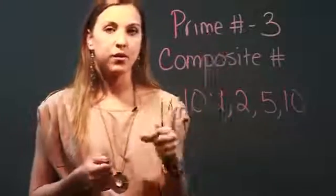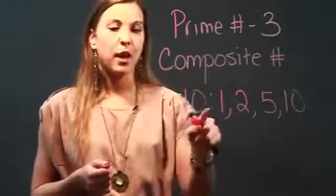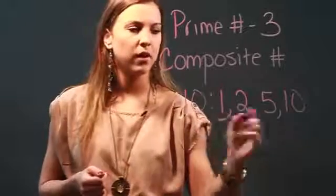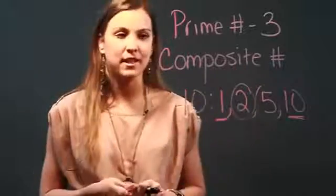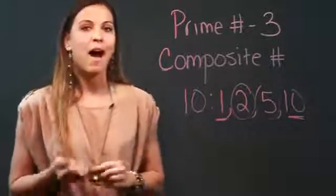So a prime number is a number that only has two factors—one and itself—but ten has the factors of one and itself plus these other numbers. And that's what makes it a composite number, and that is the opposite of a prime number.